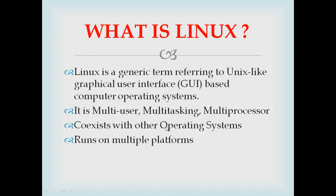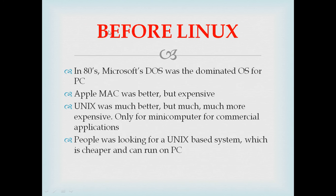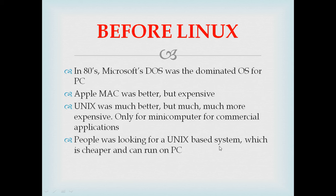Linux coexists with other operating systems and runs on multiple platforms and hardware configurations. Before Linux, in the 80s, Microsoft DOS dominated personal computers. Apple Mac was better but somewhat expensive. UNIX was much better but much more expensive — only for minicomputers and computer applications. So people were actually looking for a UNIX-based system that was cheaper and could run on a PC. This is how it started.